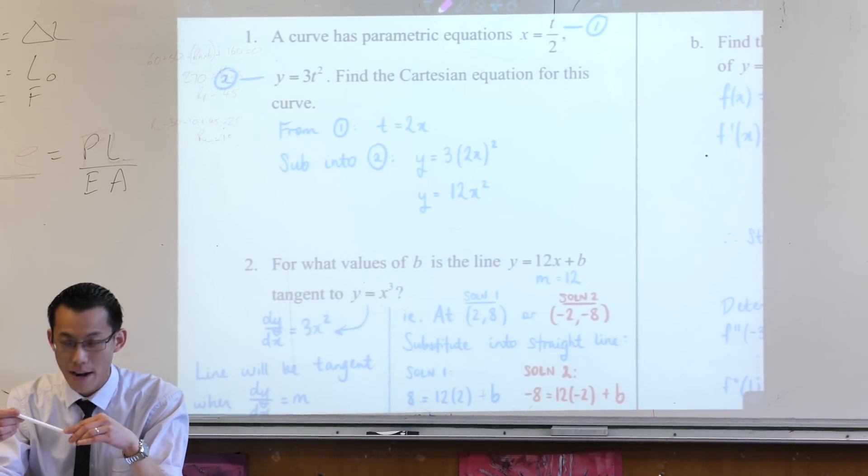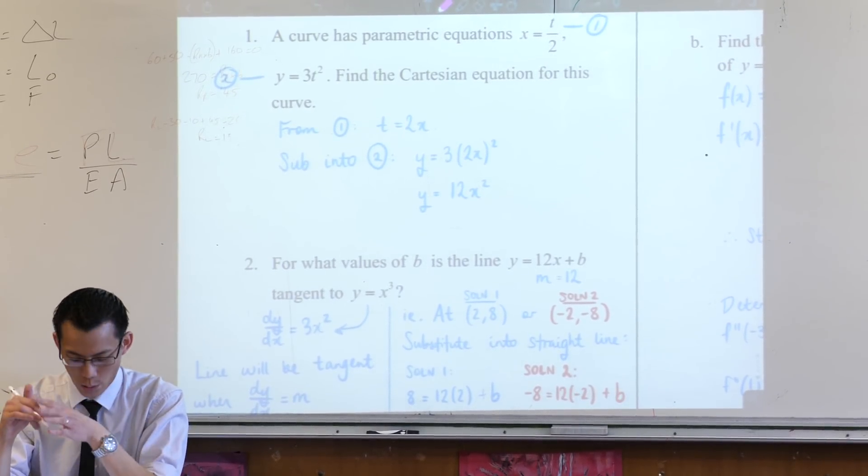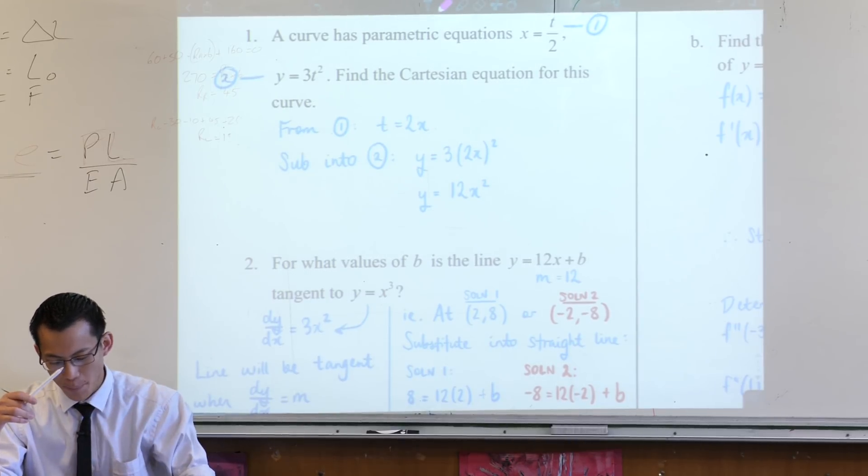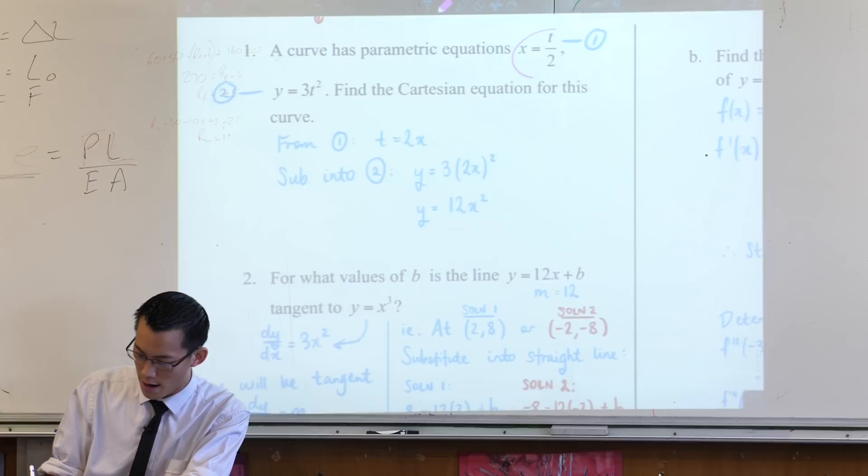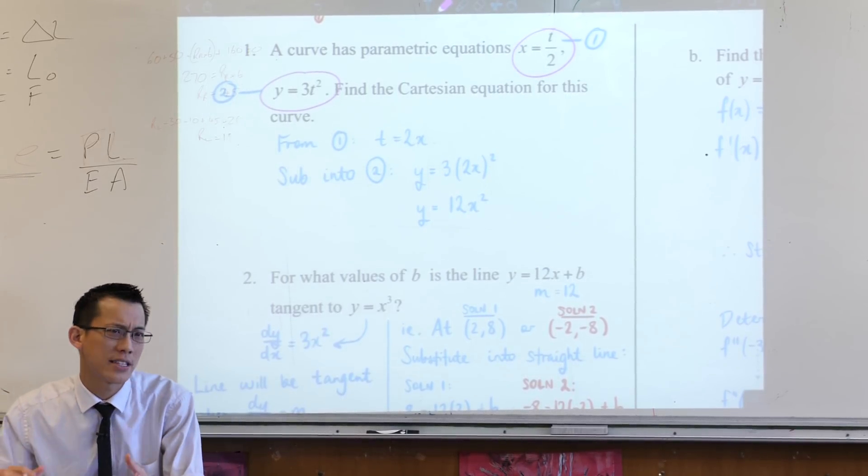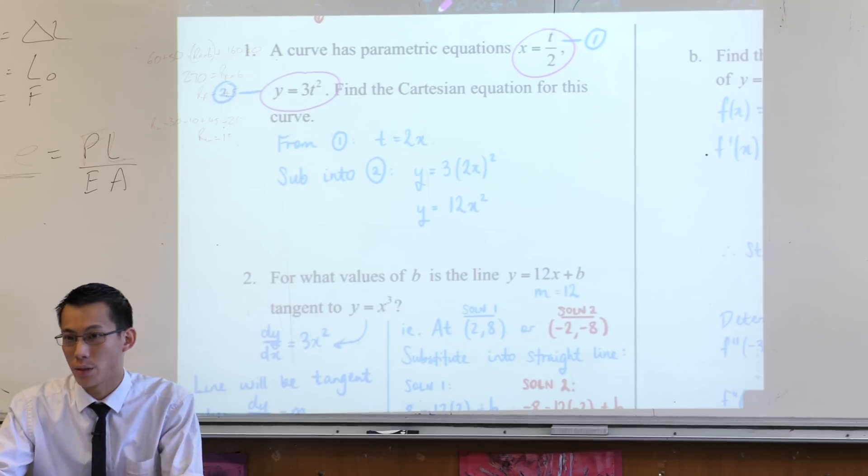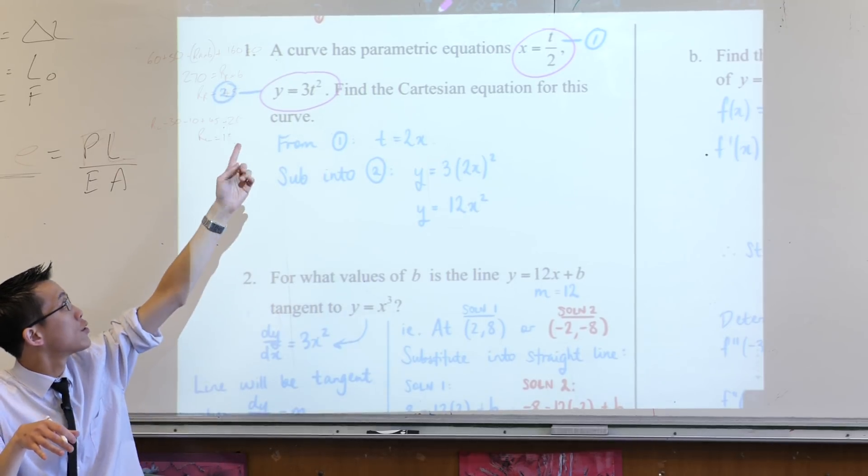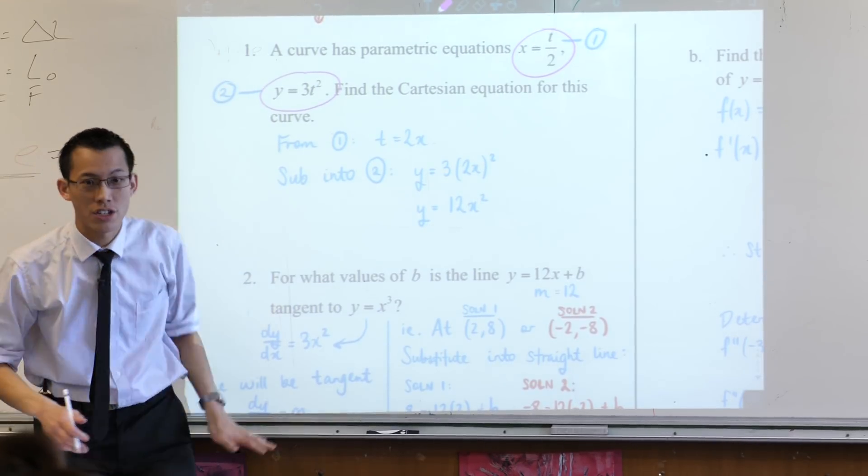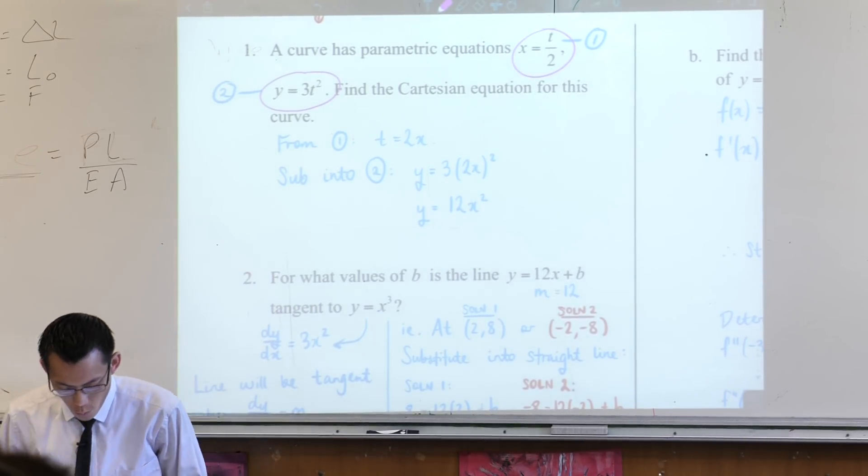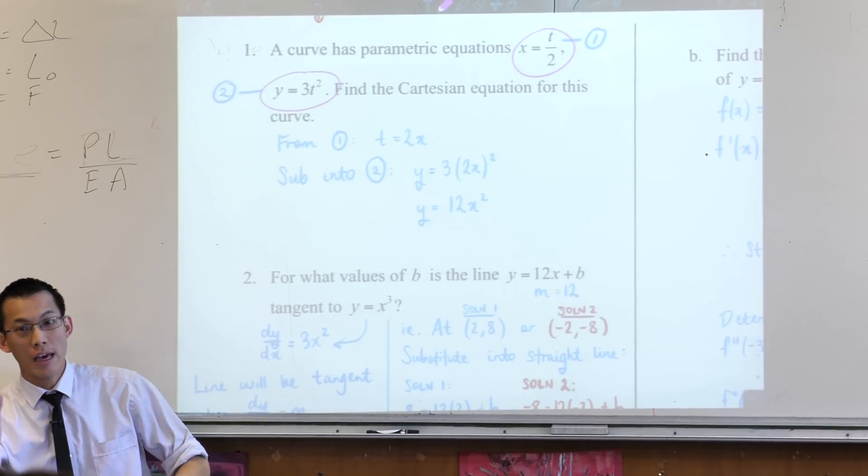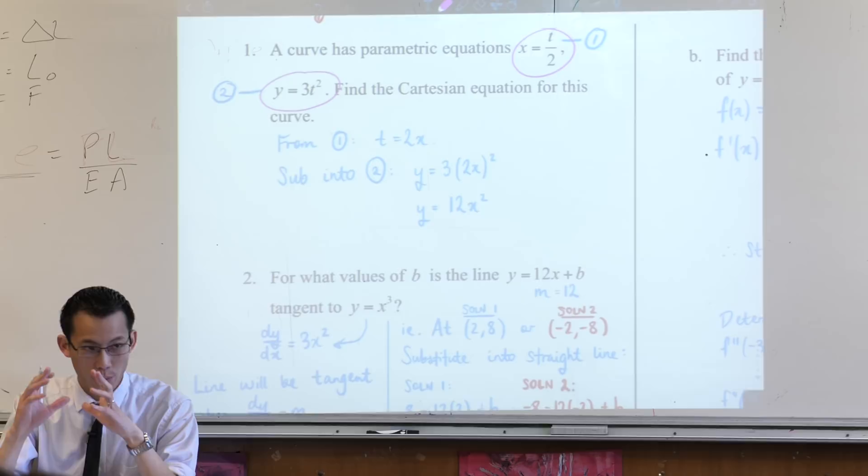So first question, there is quite a bit on parametrics in this quiz because parametrics is a tough topic. You get given parametric equations here and here, which I've chosen to number. You didn't have to number them, it just makes it easier to communicate what you're doing and how your equations interact if you do. So that's why I've called them equation 1 and equation 2. So once I do that to form the Cartesian equation, what I'm trying to do is eliminate the parameter.